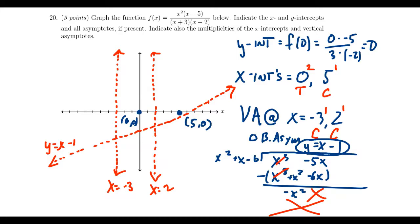If we do f(1), just trying to pick an easy value, you're going to end up with 1 times negative 4 on top. In the denominator, you're going to end up with 4 times negative 1. This simplifies to 1. So we're going to get a point at (1,1). That tells us we have to curve off towards positive infinity, because there's no x-intercepts after x equals 0 before the asymptote. So if it goes up once, it has to go up the whole way.